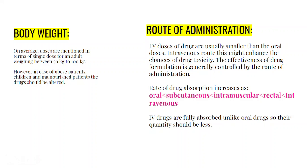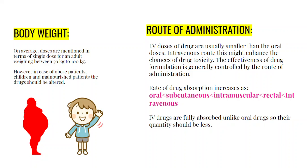The next factor is body weight. On average, doses are mentioned as a single dose for an adult weighing between 50 kg and 100 kg. However, since people come in different shapes and sizes, in the case of obese or malnourished patients, the drugs need to be altered. Similarly, in children, both age and body weight matter, so drugs must be adjusted according to different age groups and body weight.